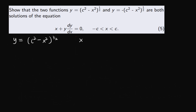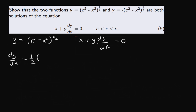The differential equation is x plus y multiplying dy over dx equals zero. Looking at this differential equation, it contains the first derivative of the function y with respect to x. So let's find the first derivative of y. That would be dy over dx, which will be 1 over 2 multiplying c squared minus x squared to the power of half minus 1, so that would be minus half.